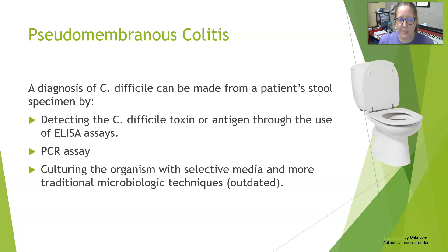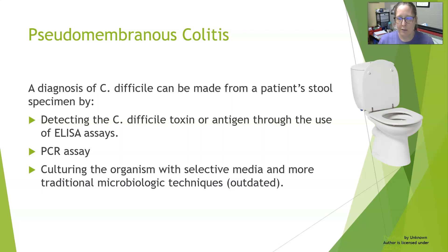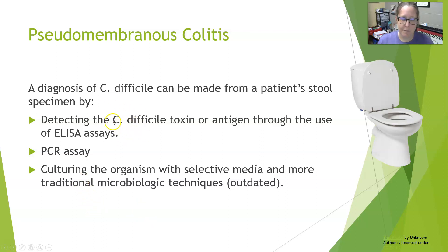The diagnosis of C. difficile can be made from the patient's stool, and we can do it in several ways. We can detect a C. difficile toxin or antigen through the use of ELISA assays — it's a quick test that takes about 15 minutes to run. There are also newer PCR assays and GI panels that can test for C. diff and other pathogens all at once. The more traditional way was to culture the organism with selective media using traditional microbiology techniques, but that is mostly outdated now. Very few labs do it that way; they'll either do a quick ELISA assay or a PCR-type assay.